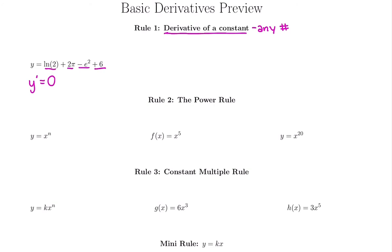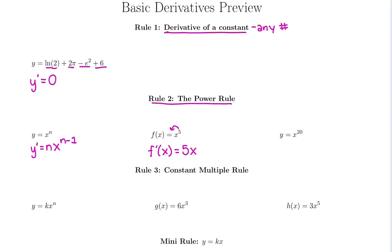Let's make things a little more interesting — let's have an x in our problem. The next rule is called the power rule. When you have x to any power, the derivative y prime is found by bringing down the power n and raising x to n minus 1. So with actual numbers: the derivative of f is f prime of x. We bring down the 5 and raise x to 5 minus 1, which is 4.